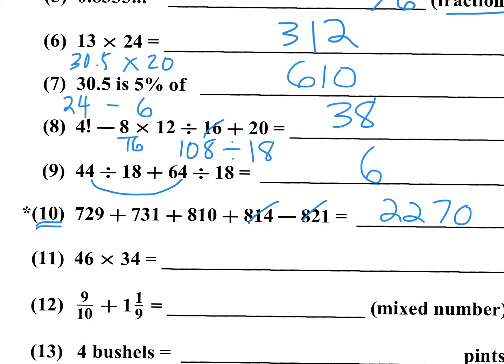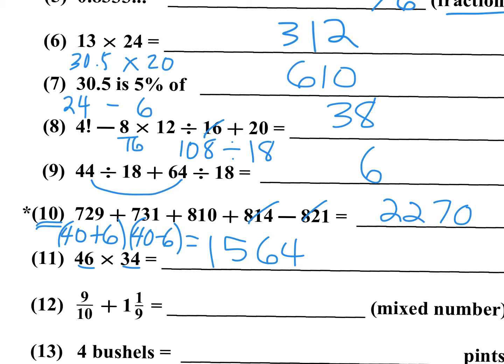Number 11: 46 times 34. Pick a middle number — 40 is the middle number, so you have 40 plus 6 and 40 minus 6. That's the difference of squares pattern: 40 times 40 is 1,600 minus 6 times 6 which is 36. So the answer isn't 1,600-something; it's 1,500-something because I'm subtracting 36. 100 minus 36 gives me 64, and the 16 becomes a 15, so the answer is 1,564. If you have any questions on shortcuts, leave a note in the comments.